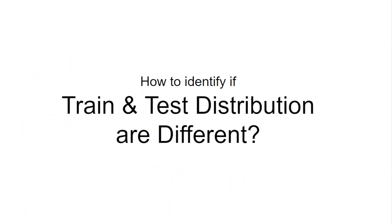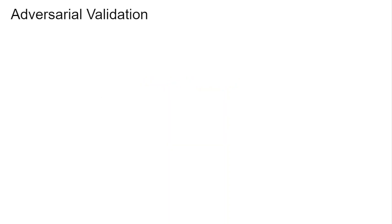How do we identify if the train and test sets are different? There are many different strategies to do this, and we are going to look at one of them. It's called adversarial validation.